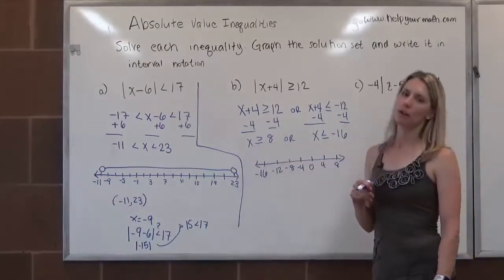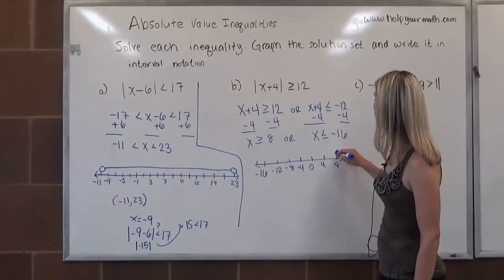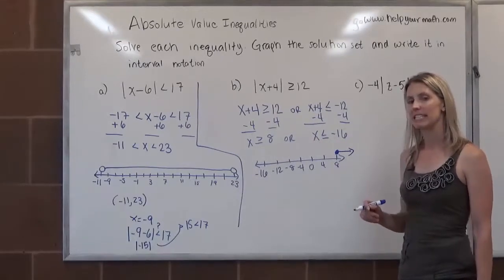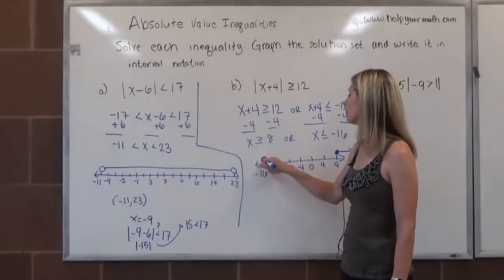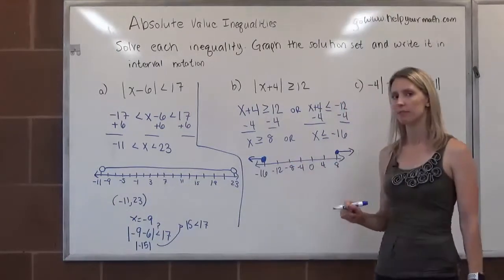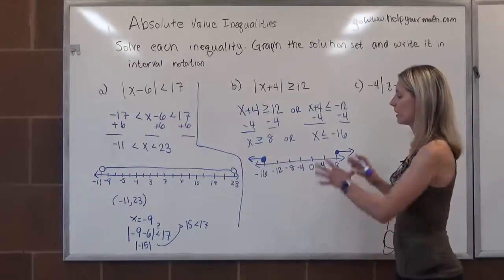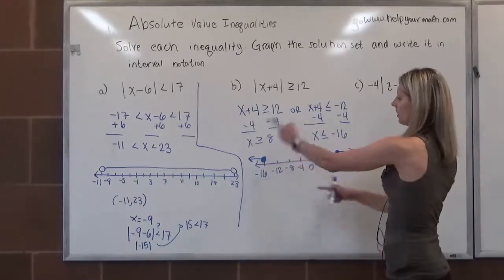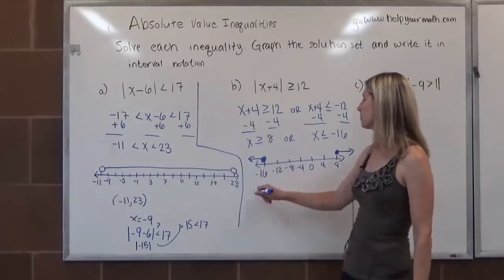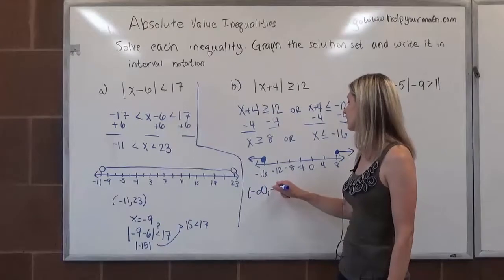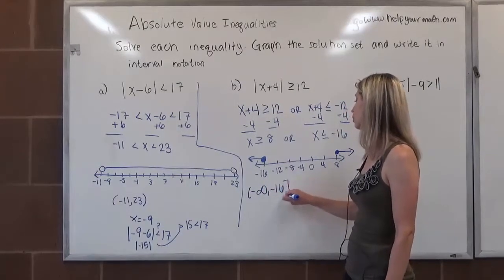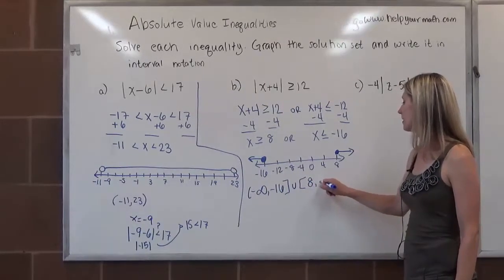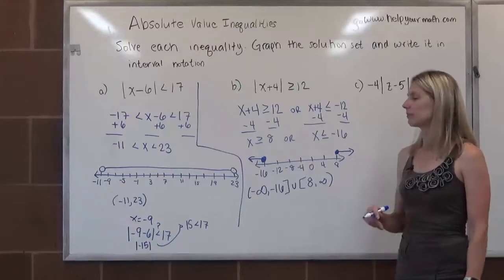All right. Now, how do I represent x is greater than or equal to 8? That's a closed circle over 8 with an arrow going to the right. How do I represent x is less than or equal to negative 16 on a number line? That's a closed circle over negative 16 with the arrow going to the left. For interval notation, this is saying that it's the numbers from negative infinity to negative 16. We include negative 16, so we use the bracket. Or they pick back up at 8, and then they just keep getting bigger without bound.